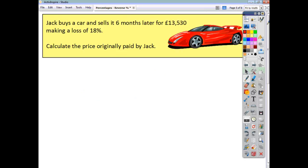Let's do one more example together. Jack buys a car and sells it six months later for £13,530, making a loss of 18%. Find out the price that Jack originally paid for the car. So the current value is less than what it once was. So it's the original value minus 18%, which is 82%.